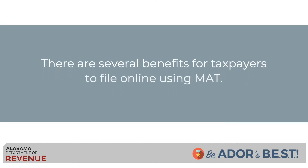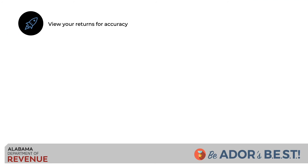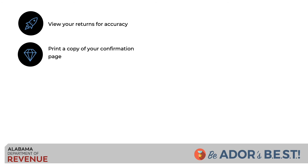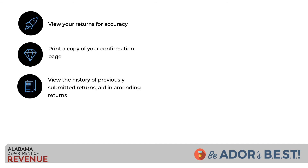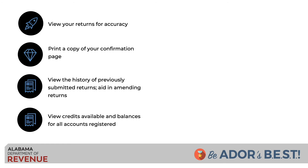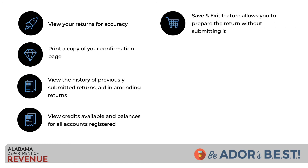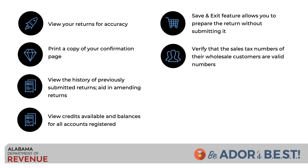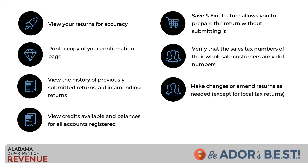There are several benefits for taxpayers to file online using MAT: view your returns for accuracy, print a copy of your confirmation page, view the history of previously submitted returns, view credits available and balances for all accounts registered, use the save and exit feature to prepare the return without submitting it, verify that the sales tax numbers of wholesale customers are valid, and make changes or amend returns as needed, except for local tax returns.